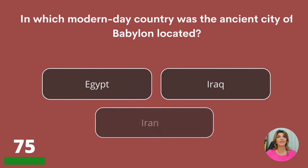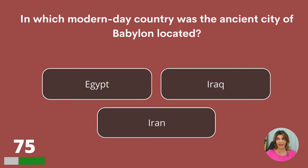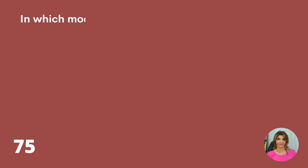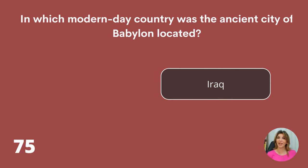In which modern-day country was the ancient city of Babylon located? Egypt, Iraq, or Iran? Iraq.